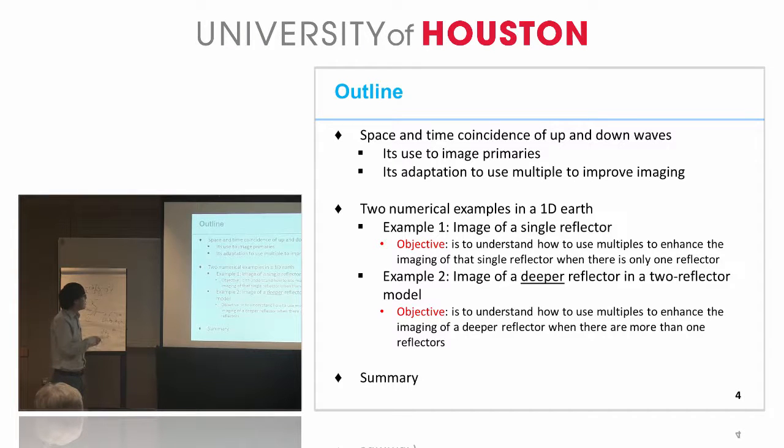Then I will focus on providing two numerical examples, because our point is that we get the idea of using multiples to enhance imaging. Example one consists of one surface and one single reflector. The objective is to understand how to use multiples to enhance imaging when there's only one reflector. In example two, we add one more deeper layer to see how to use multiples to enhance imaging when there's more than one reflector. In the end, I will provide a summary.